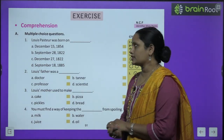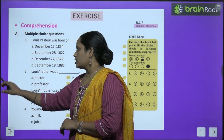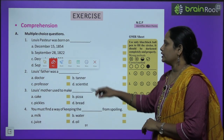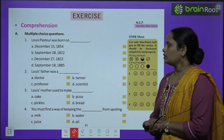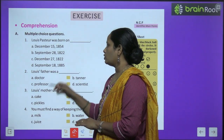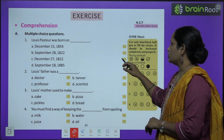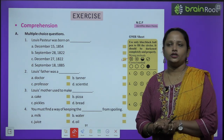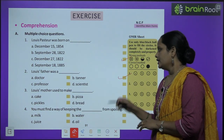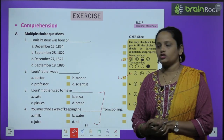Now let's move on to the book exercises — comprehension, multiple choice questions. The first question: Louis Pasteur was born in — December 15, 1854 / September 28, 1822 / December 27, 1822 / September 18, 1855. The answer is December 27, 1822. Second question: Louis's father was a doctor, tanner, professor or scientist? He was a tanner. Do the rest of the questions yourself, children.